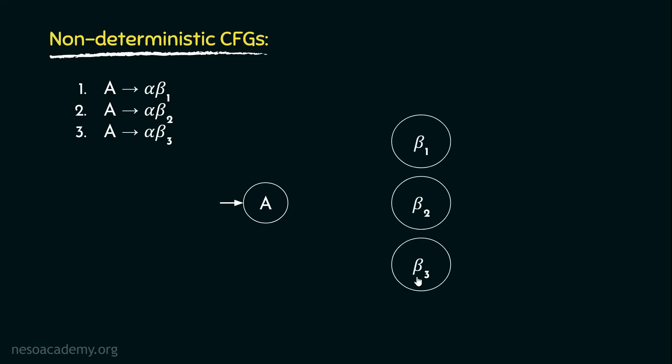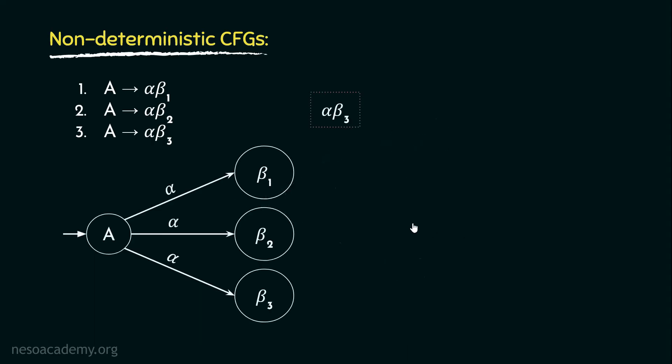Let's now observe how the top-down parsers would derive the string αβ₃. Since all the rules state that they accept α, the machine starting from the start symbol A would naturally choose the first rule and derive α first, then it would derive β₁. Basically from the state A seeing this α, the machine would reach the state β₁.